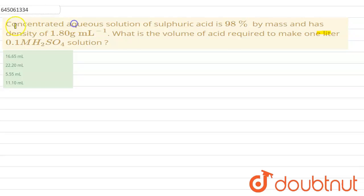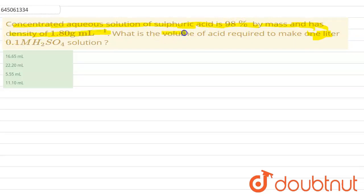In this question, it is said that concentrated specific solution of sulfuric acid is 98 percent by mass and has a density of 1.80 gram per mL. We have to find out the volume of acid required to make 1 liter of 0.1 molar H₂SO₄ solution.